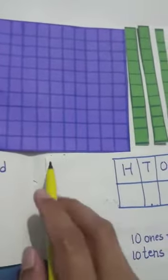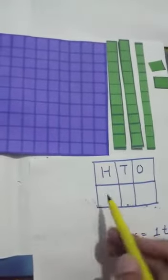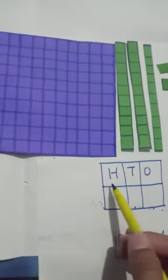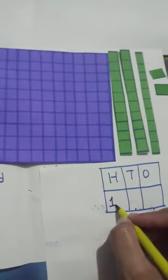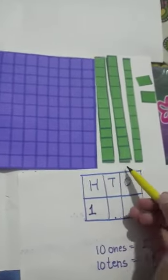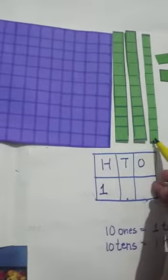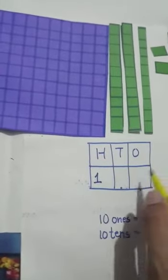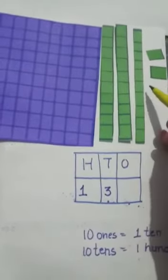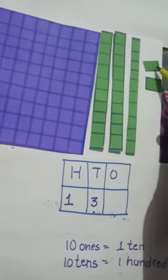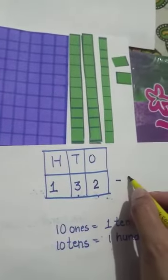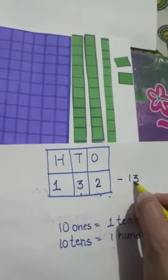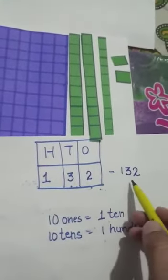Now let's write a number using these units. We have one hundred, so we write one here. Next, we count the number of tens: one, two, three — we have three tens. Then we count the ones: one, two — we have two ones. What number do we have now? We have one hundred thirty-two.